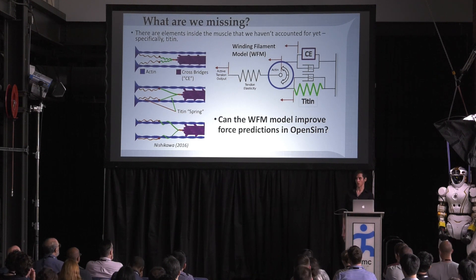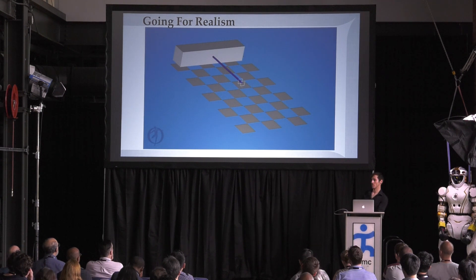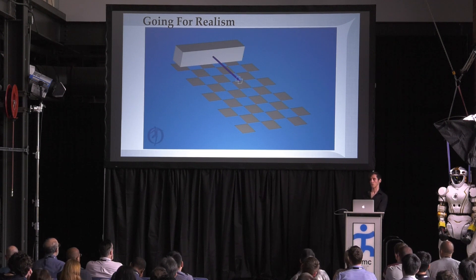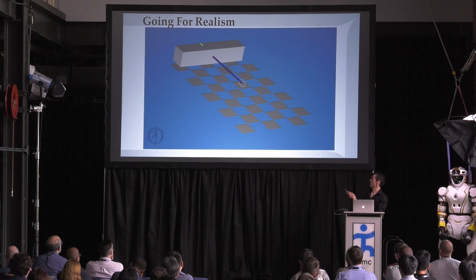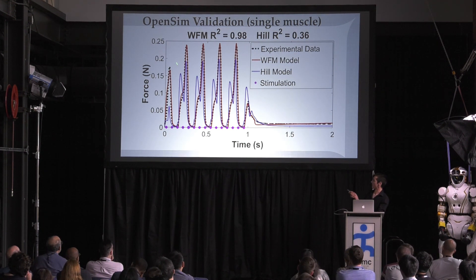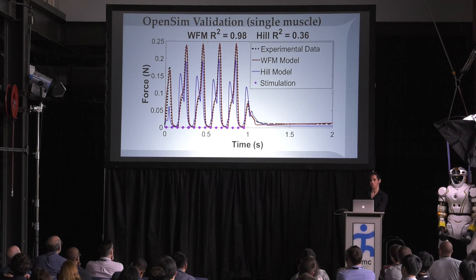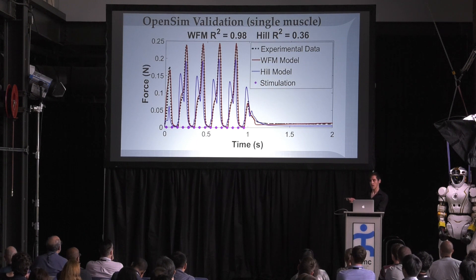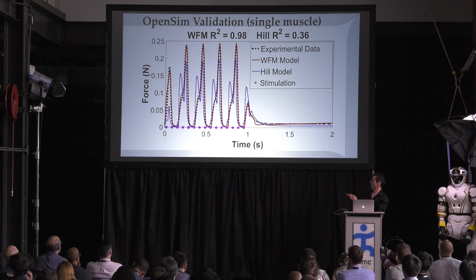The question I had was: would that improve force predictions in OpenSim? We had 259 ex vivo mouse soleus experiments to work with. The cool thing about OpenSim is that you can define an experiment in terms of length, so you can have two muscle models sharing the space occupied by a single muscle and just control the length input. With constant stimulation and a cyclic length change of plus or minus 10% of resting length, we see the experimental forces — black dotted line — WFM in red, Hill model in blue. The more nuanced description of muscle contraction allowed the WFM to more realistically reflect forces during cyclic length changes, as it did in the other 258 ex vivo mouse experiments.